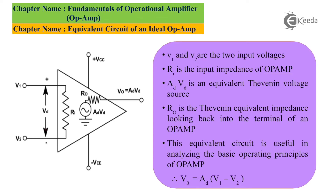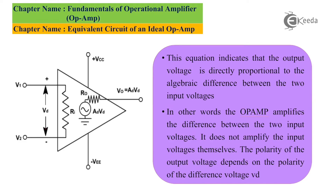This equivalent circuit is basically used to analyze the basic operation of the op-amp, that is V0 equals AD into (V1 minus V2). This indicates that the op-amp will amplify the difference between the input signals applied to the input terminals of the op-amp.